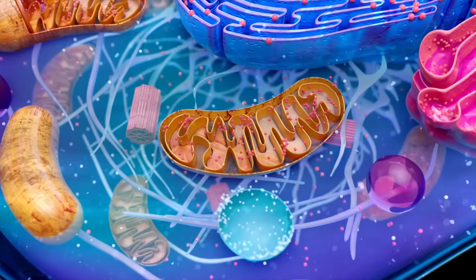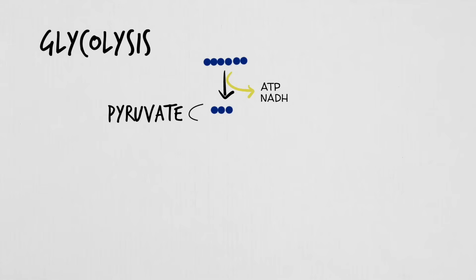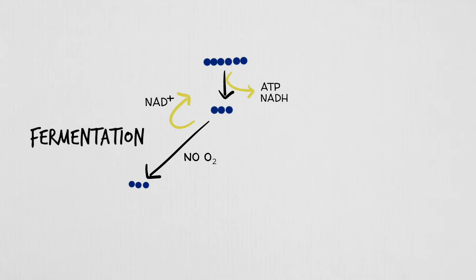Cellular respiration happens in four stages: glycolysis, pyruvate oxidation, the Krebs cycle, and the electron transport chain. The first three steps oxidize glucose completely, transferring high-energy electrons to coenzymes NADH and FADH2. Some ATP is made directly through substrate-level phosphorylation, but most ATP comes later through oxidative phosphorylation, powered by chemiosmosis in the mitochondria. Glycolysis happens in the cytosol, where one 6-carbon glucose molecule is split into two 3-carbon pyruvates. It requires an input of 2 ATP but produces 4 ATP and NADH for later stages. If oxygen isn't available, cells switch to fermentation, which regenerates NAD+ so glycolysis can continue. Fermentation produces a carbon byproduct — often alcohol in yeast or lactic acid in animals.